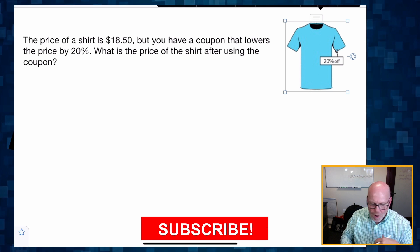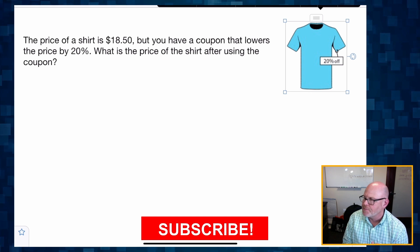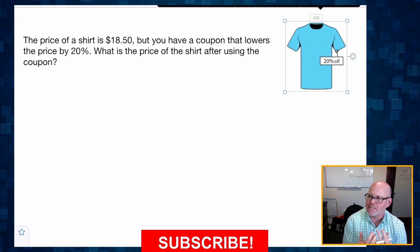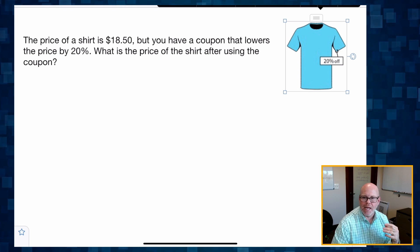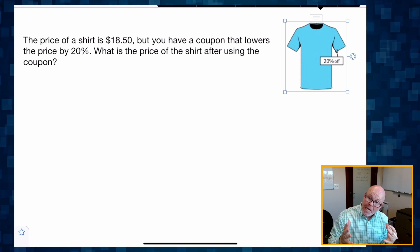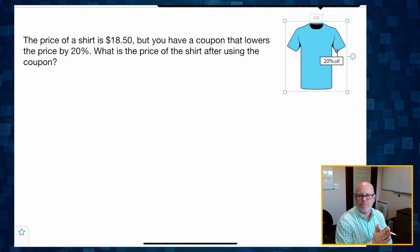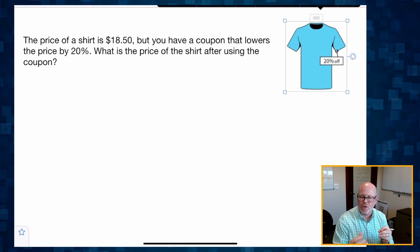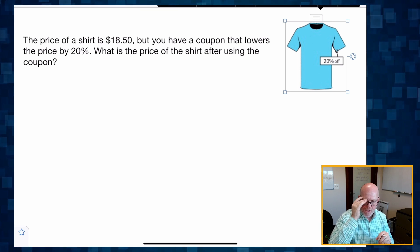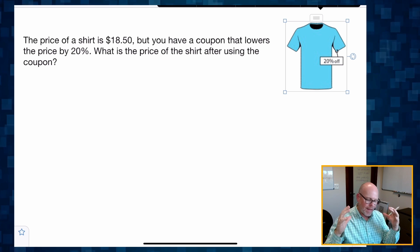So what we've got here is a shirt and it says that this shirt is $18.50, but you have a coupon that lowers the price by 20%. What is the price of the shirt after using the discount? So that coupon.